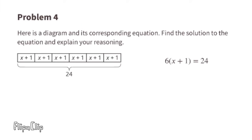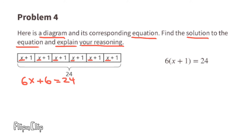Problem number four: here is a diagram and its corresponding equation. Find the solution to the equation and explain your reasoning. This tape diagram worth 24 is divided into six sections, each containing x plus one. That's a total of six x plus six, which equals 24. The equation is six times x plus six times one equals 24.